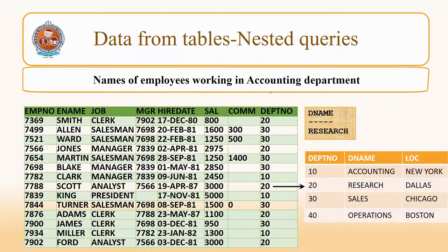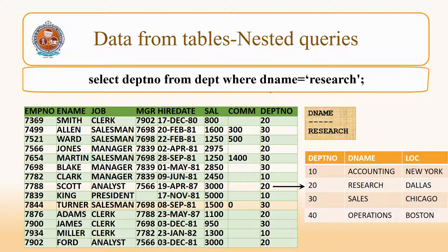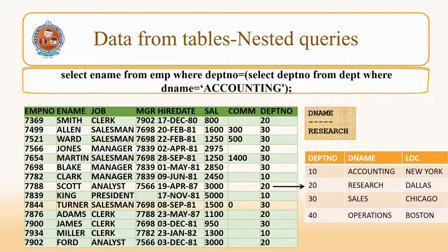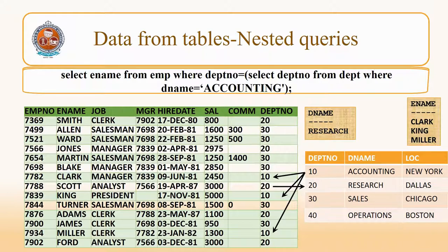The next example is also a nested query — the query is: names of employees working in the accounting department. We obtain the accounting department number from the DEPT table, and then substitute it in the query on the EMP table. SELECT DEPT number FROM DEPT WHERE DNAME = 'Accounting', and then substitute this department number in the external query: SELECT ENAME FROM EMP WHERE DEPT number equals the accounting department number. The result is that the names of employees are Clark, King, and Miller.